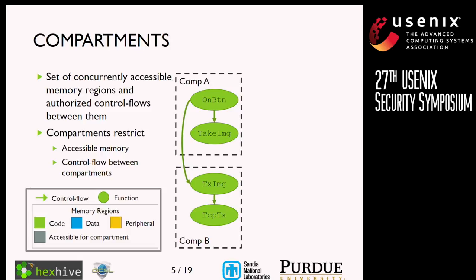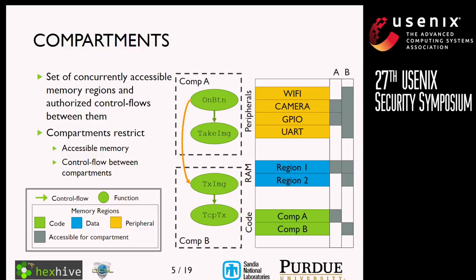If we put the functions into compartments A and B, we restrict the control flow so only the authorized edge between compartments is allowed. We also place restrictions on the memory those compartments can access. In the middle of this image in yellow there are memory-mapped peripherals — Wi-Fi, camera, GPIO, and a UART. In RAM there's global data in region one and region two. The code regions are in green, and compartments A and B are shown with a gray box indicating which compartments have access to which region of memory.